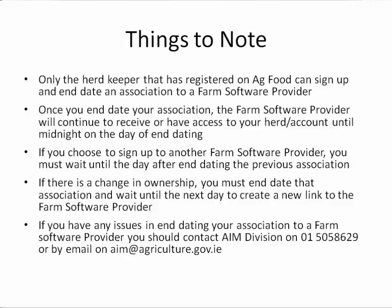If you have any issues in end dating your association to a farm software provider you should contact AIM Division on 015058629 or by email on aim@agriculture.gov.ie.